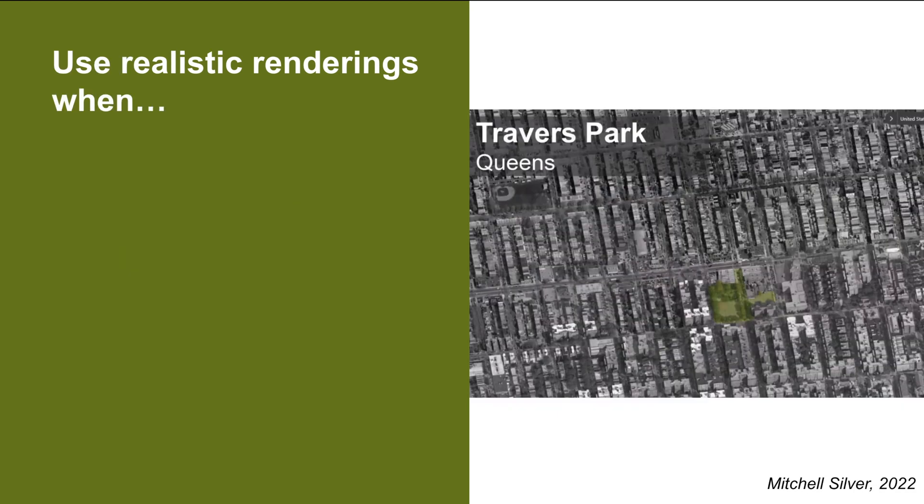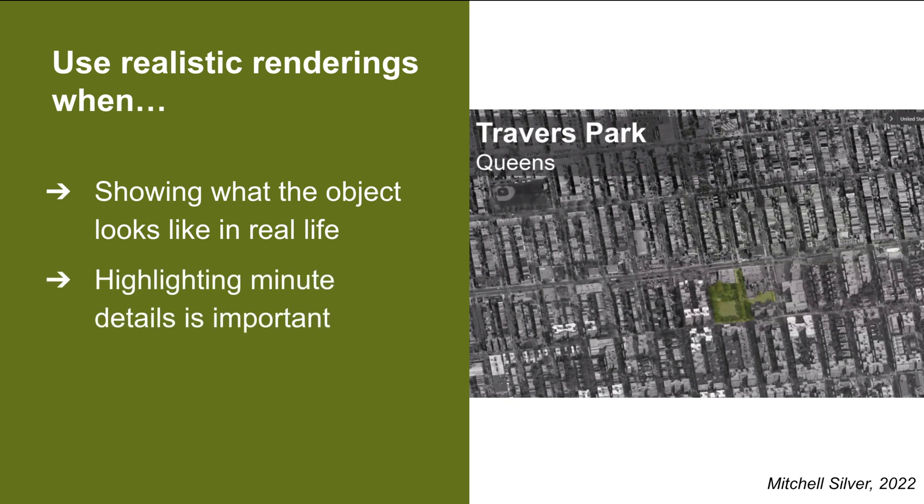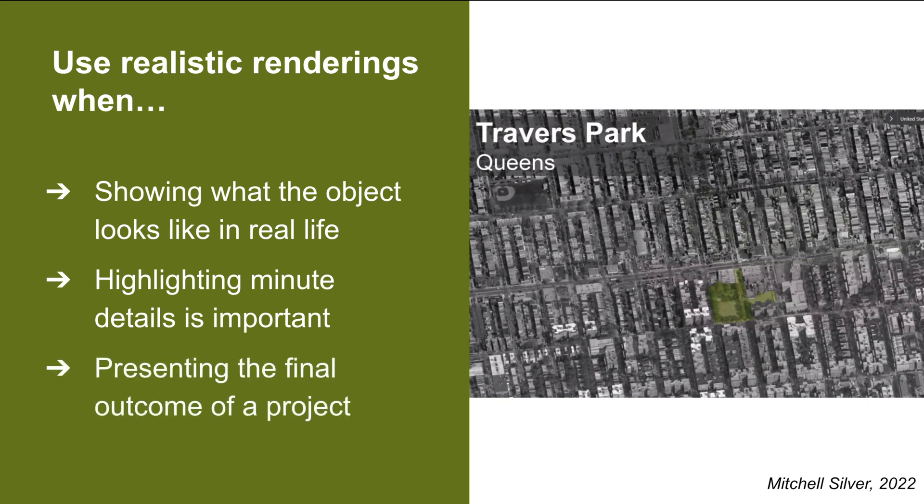Realistic renderings or images in engineering documents are used when you want to show what the object or place looks like in real life, you are highlighting minute details of real objects and this cannot be accomplished using diagrams, or you're presenting the final outcome of a project and want to show the results.